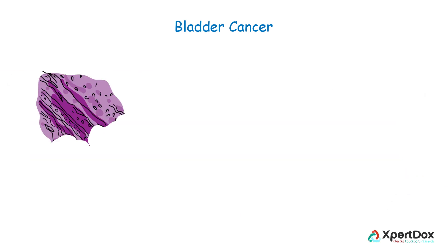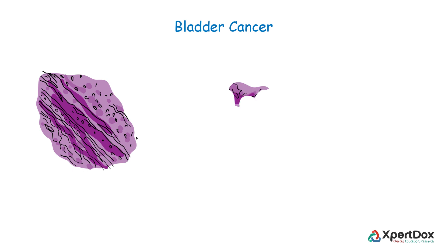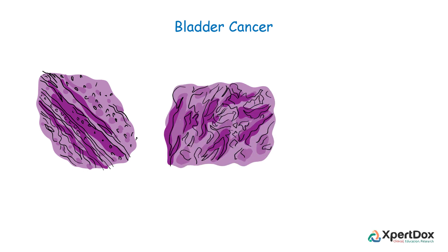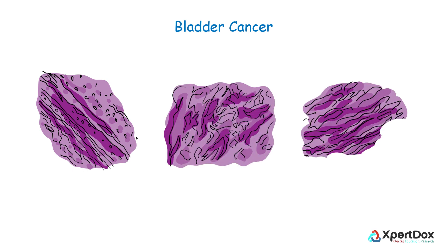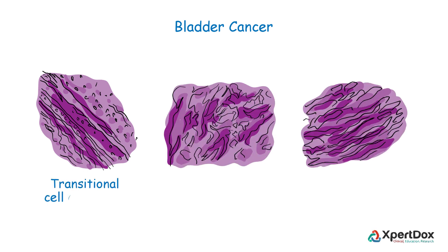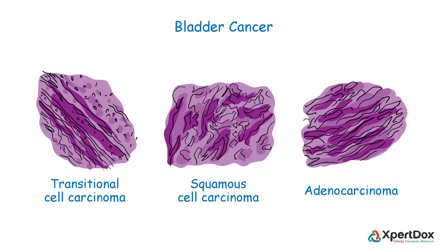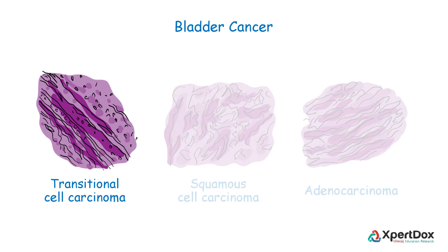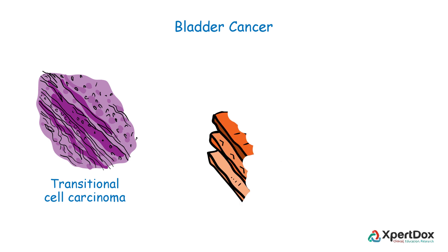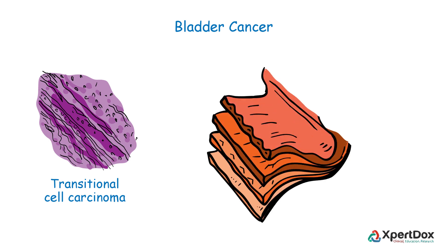There are three types of bladder cancer that begin in different types of cells in the lining of the bladder: transitional cell carcinoma, squamous cell carcinoma, and adenocarcinoma. Transitional cell carcinoma begins in cells in the innermost tissue layer of the bladder.